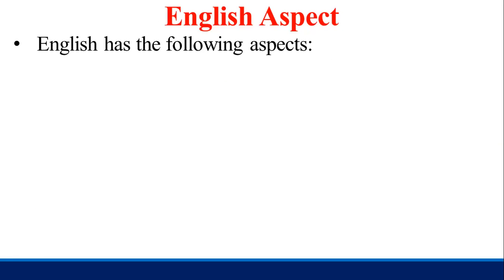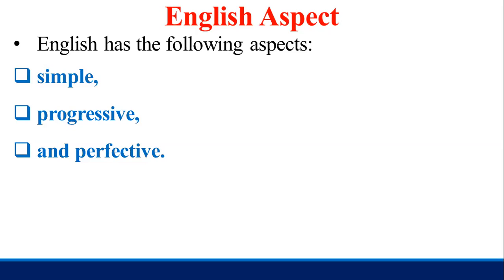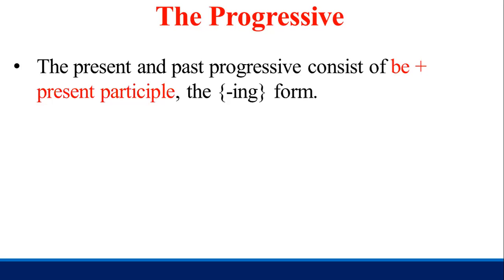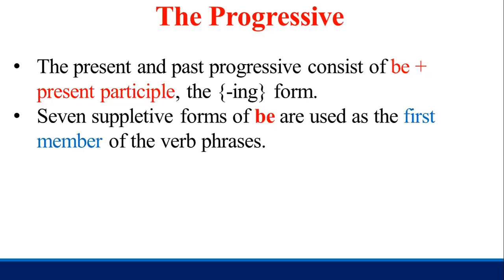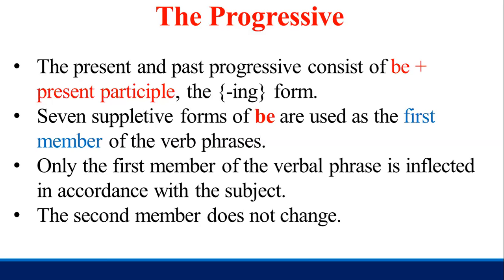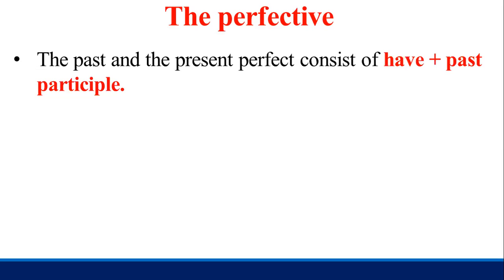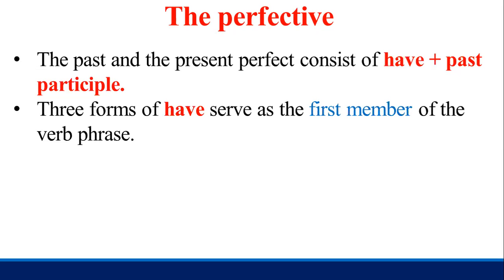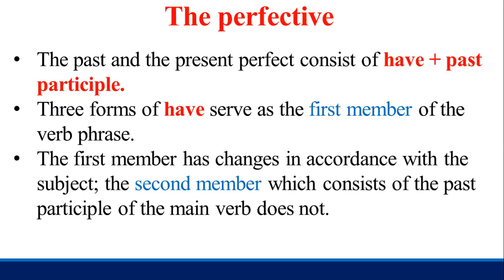In English aspects, English has the following aspects: simple, progressive, and perfective. For the progressive, the present and past progressive consists of be plus present participle (the -ing form). Seven suppletive forms of be are used as the first member of verb phrases; only the first member is inflected in accordance with the subject, while the second member doesn't change. For the perfective, the past and present perfect consists of have plus past participle; the three forms of have serve as the first member, and only the first member changes.